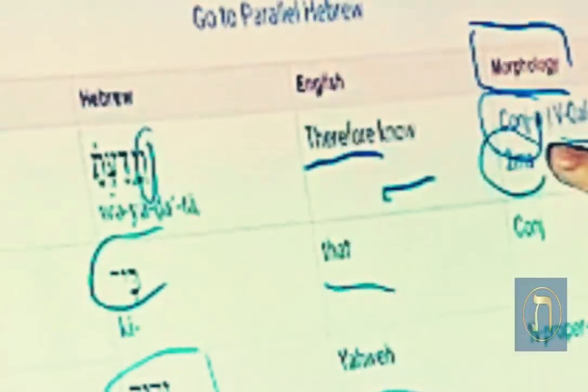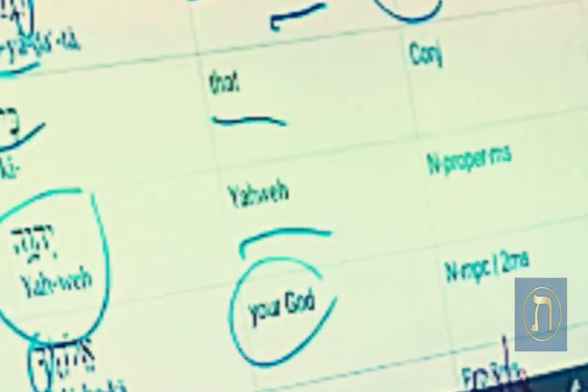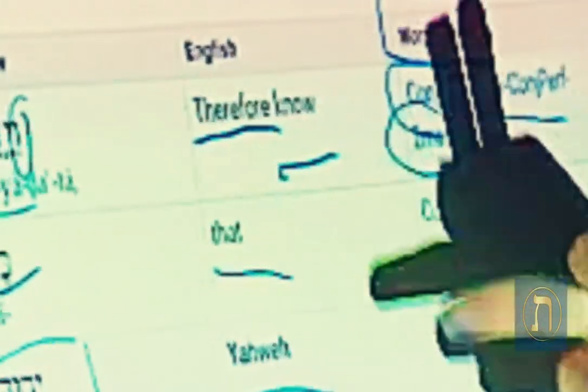Weyadatah is actually made up of a conjunction vav, which can be translated either as and or therefore, and a kaal perfect second masculine singular. In fact, it's what I try to say. Therefore you need to know that God, your God, beautiful.